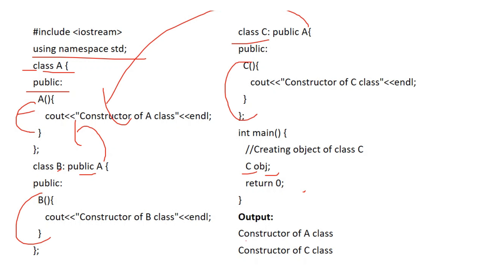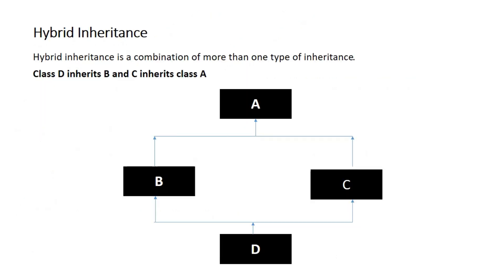This is hybrid inheritance. Hybrid inheritance is a combination of more than one type of inheritance — for example, multiple, multilevel, and hierarchical inheritance combined.